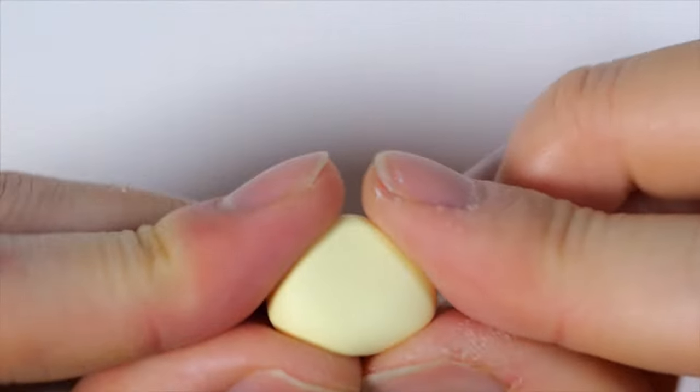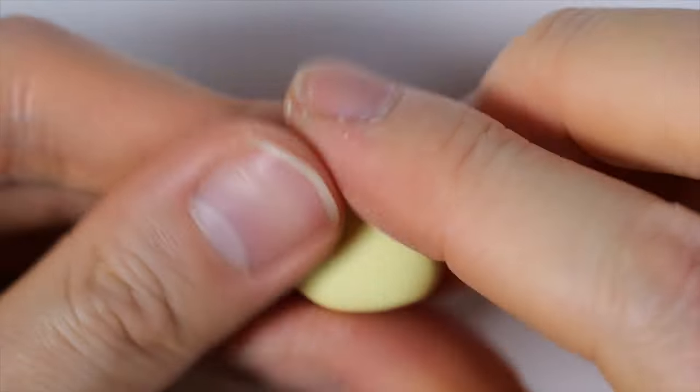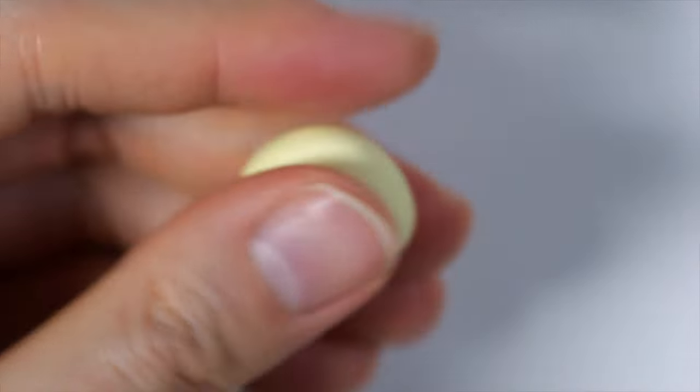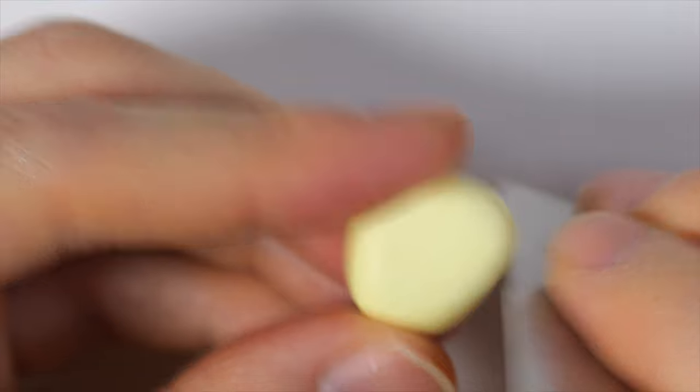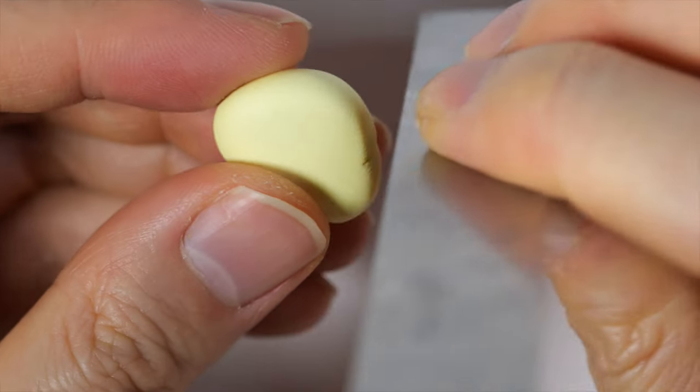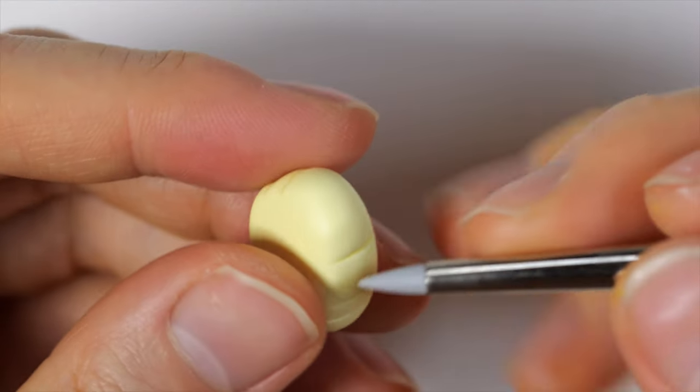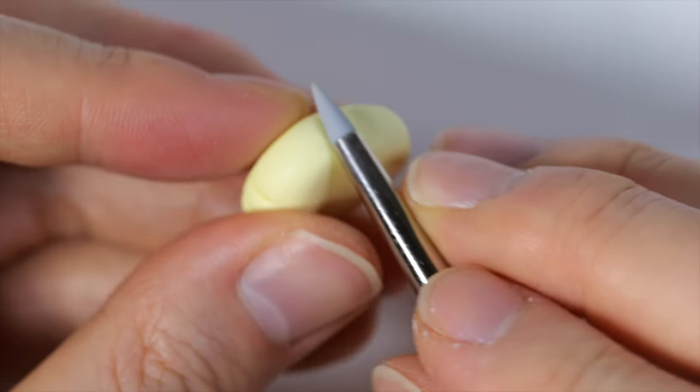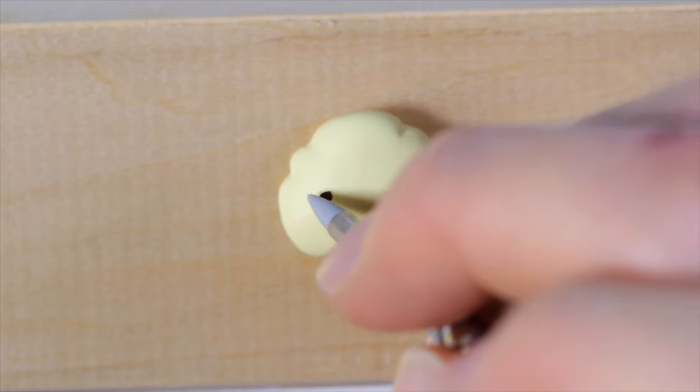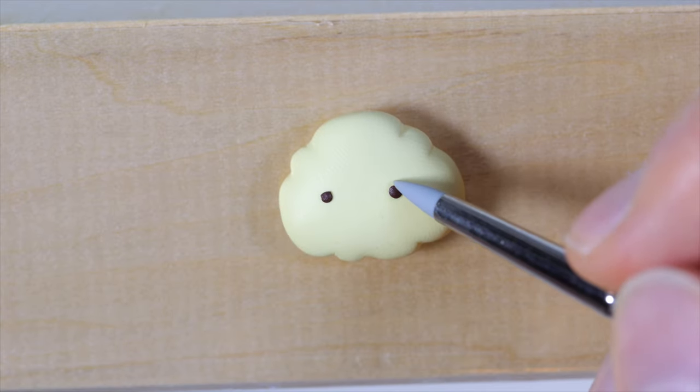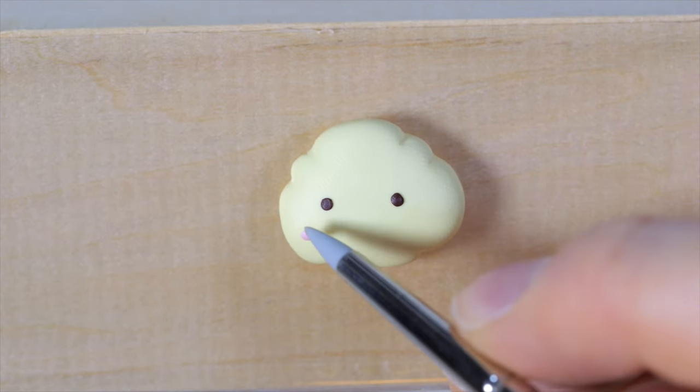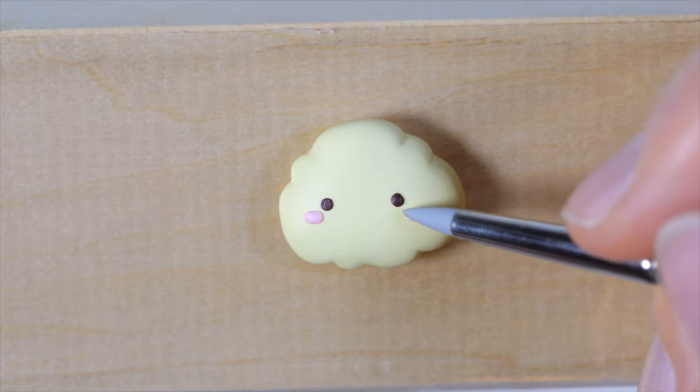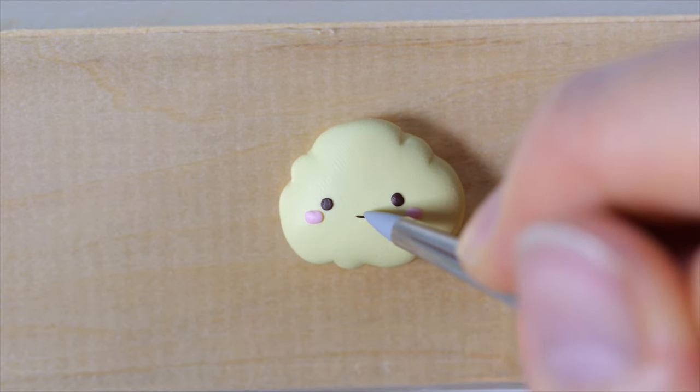Next, we're going to make the cloud. So I'm taking some light yellow clay and I'm going to pinch it out into a basic cloud shape. And I'm going to make kind of indents on the side. And then using my tools, I'm just going to soften out those indents. And we're going to give it two dot eyes. Some oval blush. And a line smile.